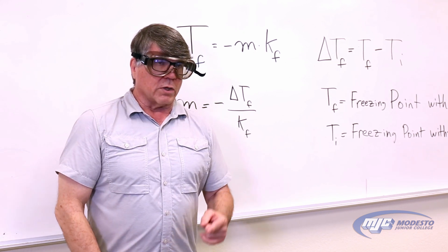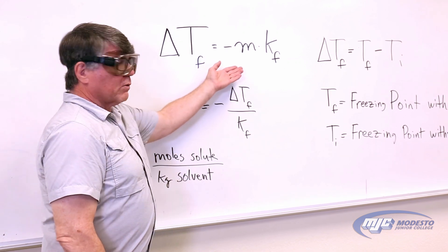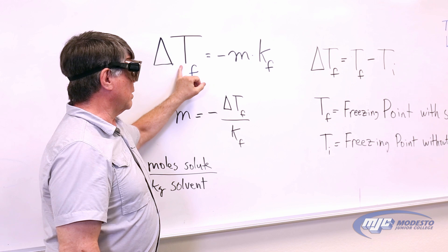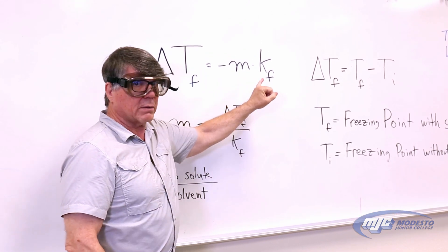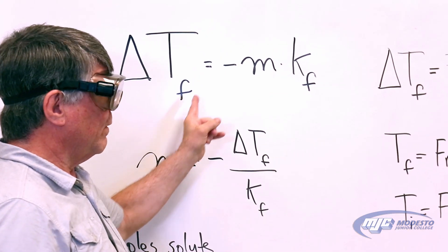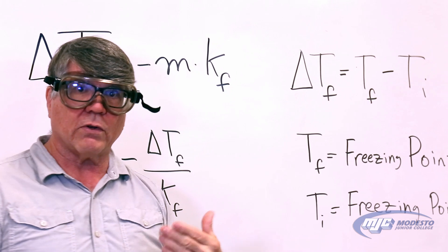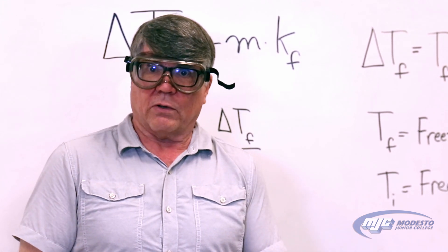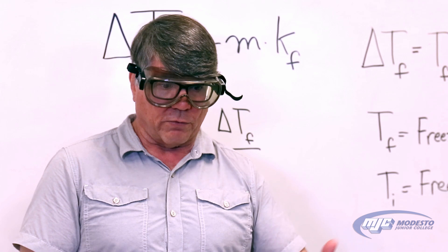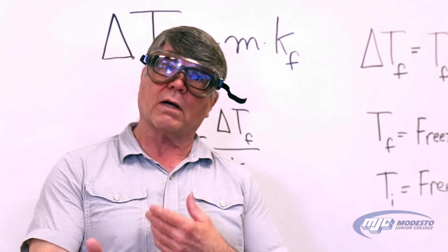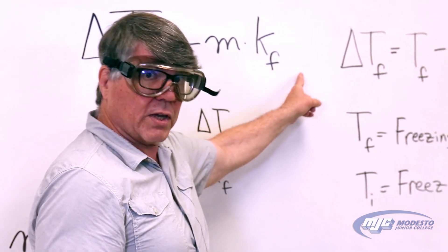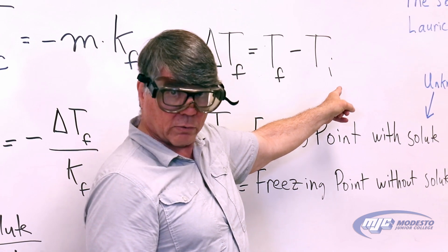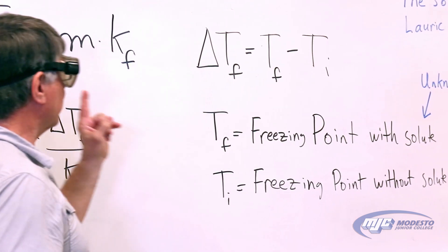So what we're going to do is we're going to use the freezing point depression equation — that's this guy right here. What it says is: the delta Tf, which means the change in the freezing point, is equal to negative m times Kf. The delta Tf is the change in the freezing point when you add that solute to the solvent. So water freezes at zero Celsius when it's just water. If you add some salt, it freezes at some lower temperature — negative one, negative two, something like that — depending on how much salt you put in it. The delta Tf would be the freezing point with the solute in it, with the salt in it, minus the freezing point without the solute, just a pure solvent.